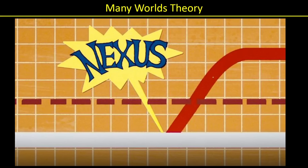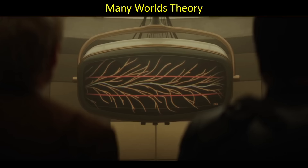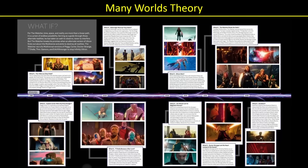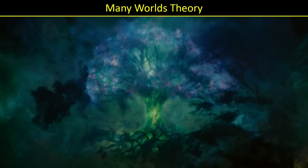We continue to see the many worlds theory come into play during the Loki series with nexus events that create branches. We saw lots of branching throughout the series, and of course we saw branching in Deadpool and Wolverine as well. We also see it with the branching from the What-If episodes, showing how each episode branches off the sacred timeline. And of course the most famous example of the many worlds theory is Loki's tree — it's basically a tree with branches.